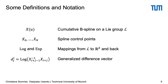We denote a cumulative B-spline on a Lie group by x, where u is a normalized time variable. Prominent examples of such Lie groups are the group of 3D rotations or the group of rigid body motions. The spline is defined by a set of control points x0 through xn, which are elements of L. With the log and exp mappings we go from the Lie group to its tangent space and back.